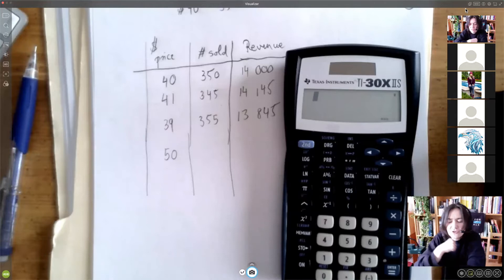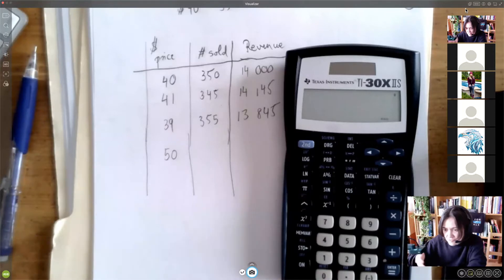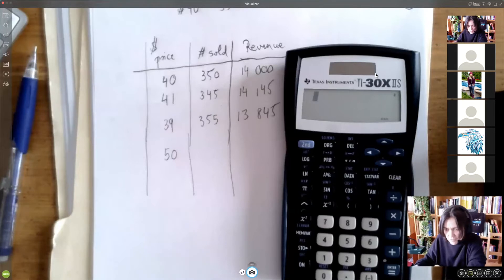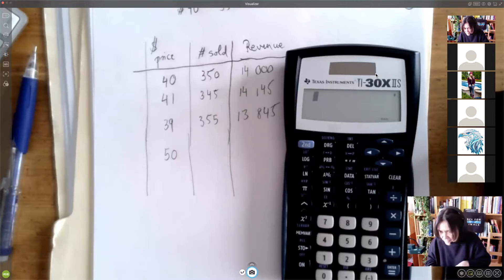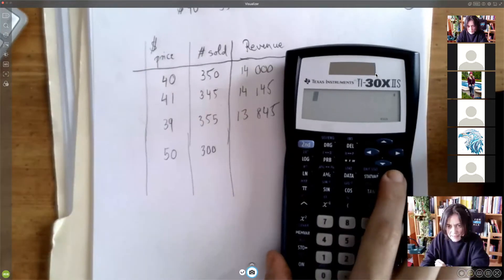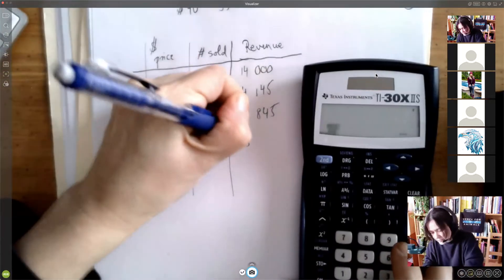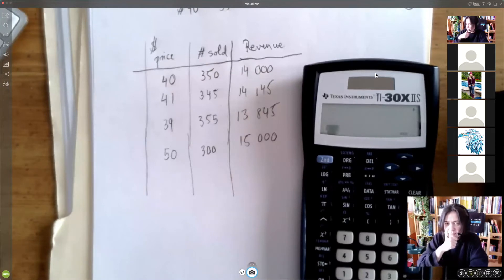No, no, no, no, no. When you raise the price, the demand lowers. So when you increase the price, because the problem says that from $40, each increase, each dollar increase will result in a loss of five tickets. So we raise $10. That means we lose 50 tickets. So altogether, we can only sell 300. And so then I think I know what this is going to be. It's 15,000. So it looks like we should raise the price.